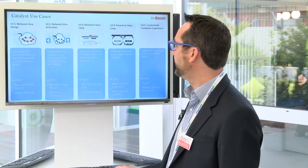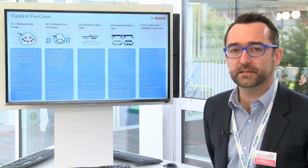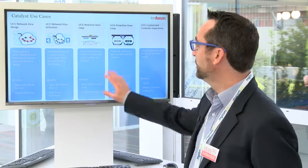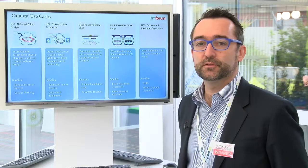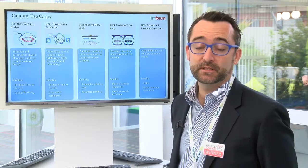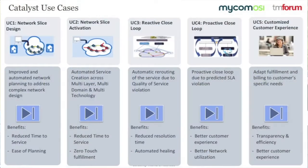We covered five use cases in the catalyst, and we are going to concentrate here in this short demo around the reactive and the proactive closed-loop, where Mycom OSI proactively monitoring the QoS on the digital services and on the network slices themselves was able to, through the set of EA products, not only identify the various issues but also automate the root cause analysis and initiate some repair actions in order to remediate automatically any problems occurring in the network.